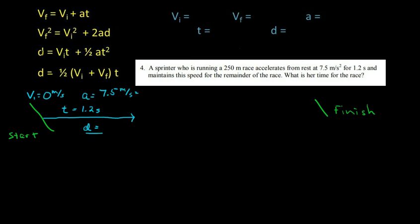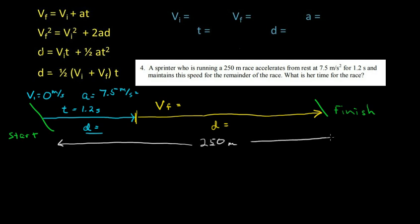When she reaches there, she will have reached a final velocity, which we also don't know. But we do know that once she reaches that final velocity, she maintains that same speed until she reaches the finish line. So we don't know this distance, we also don't know this distance. However, we do know the total distance. So the total distance is 250 meters.